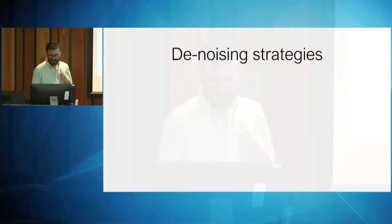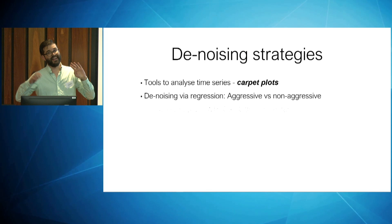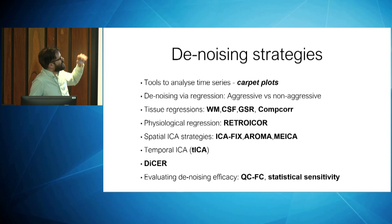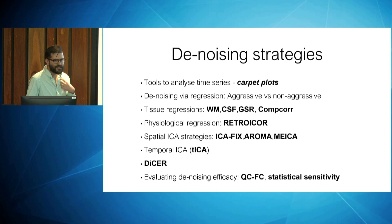Moving to the next step: once you've done the minimal pre-processing pipeline using fMRIPrep or any other tool, you have to look at the data and see what's left. There are some tools to discuss here. I'll go through ways to look at your data, types of denoising, and some of the terminology. There are a lot of things to describe so this will be a very big overview, with questions at the end.